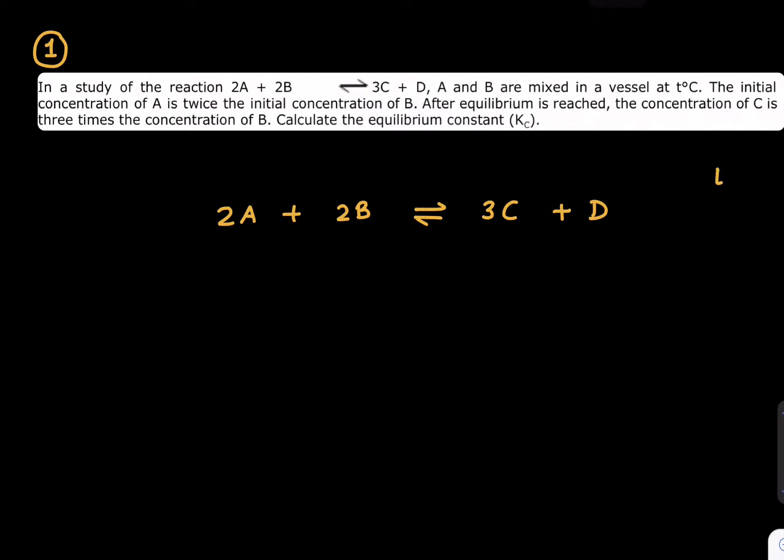The initial concentration of A is twice the initial concentration of B. Let's say I assume B's concentration, so the initial concentration of A is twice that of B. So A should be 2a at time t = 0. As per the question's assumption, the concentration of A is 2a which is double the concentration of B.